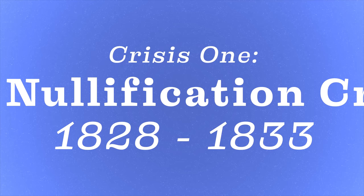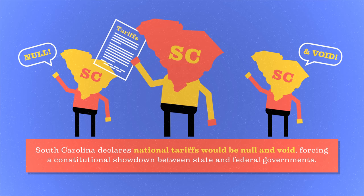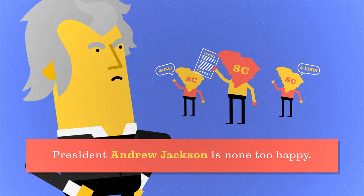Let's look back at Crisis 1, the Nullification Crisis, 1828 to 1833. South Carolina declares national tariffs would be null and void, forcing a constitutional showdown between state and federal governments. President Andrew Jackson is none too happy. Congress is concerned about the economy, and the tariffs are perceived to help manufacturing in the north and in the west. Southerners, though, perceive the tariffs as being economically oppressive.